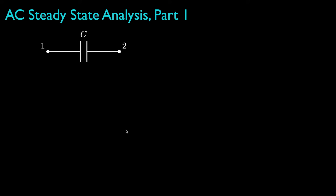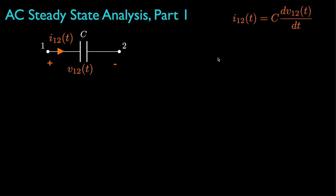Another element we need to consider is called a capacitor, represented with two parallel lines like this, and it is characterized by its capacitance, which has units of Farads. Much like the inductor, the voltage-current relationship for a capacitor depends on the way the voltage and current fluctuate in time. Specifically, the current through the capacitor is equal to the capacitance times the derivative of the voltage across the capacitor with respect to time. It's important to pay attention to the reference direction for the current and the polarity for the voltage drop. When the current direction is from the negative to the positive of the voltage, then we'll need to include a minus sign in this definition.